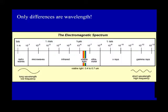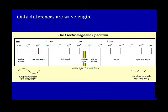Up to now we've discussed only visible light. However, visible light is only a small part of the electromagnetic spectrum. Light has much smaller wavelengths than blue and longer wavelengths than red. From long to short wavelengths, the spectrum is made up of radio, microwave, infrared, visible, ultraviolet, x-ray, and gamma rays.